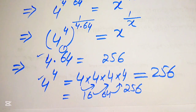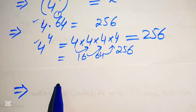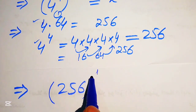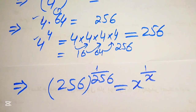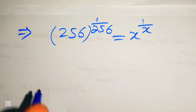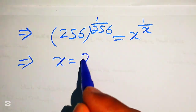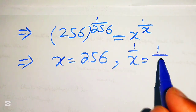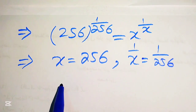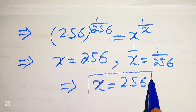After replacing these values, the equation becomes 256 to the power of 1 over 256 equals to x to the power of 1 over x. Comparing both sides: matching the bases gives x equals 256, and matching the exponents gives 1 over x equals 1 over 256, so from both cases we get x equals 256 as the final answer.